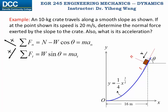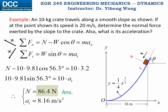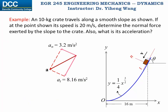Therefore, in these two equations of motion, we know the weight, we know θ, we know the mass, and the normal acceleration a_n. Substituting these in, we only have two unknowns: N, the normal force, and a_t, the tangential acceleration. With two equations we can solve for both. The normal force is 86.4 N — that is one of the answers we were looking for. Because we now know the tangential acceleration, we can fully characterize the acceleration vector. The magnitude of acceleration can be determined to be 8.77 m/s², and that is the second answer we're looking for.